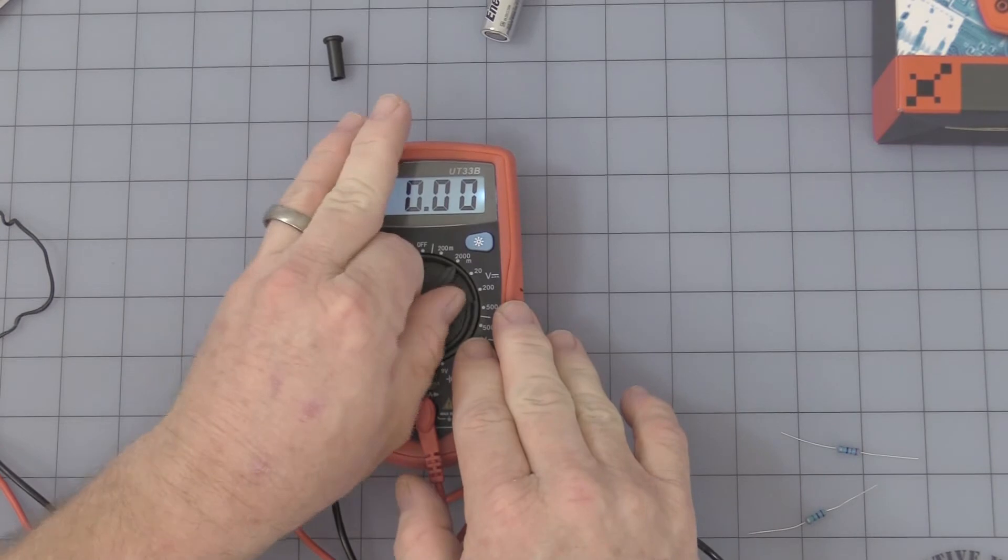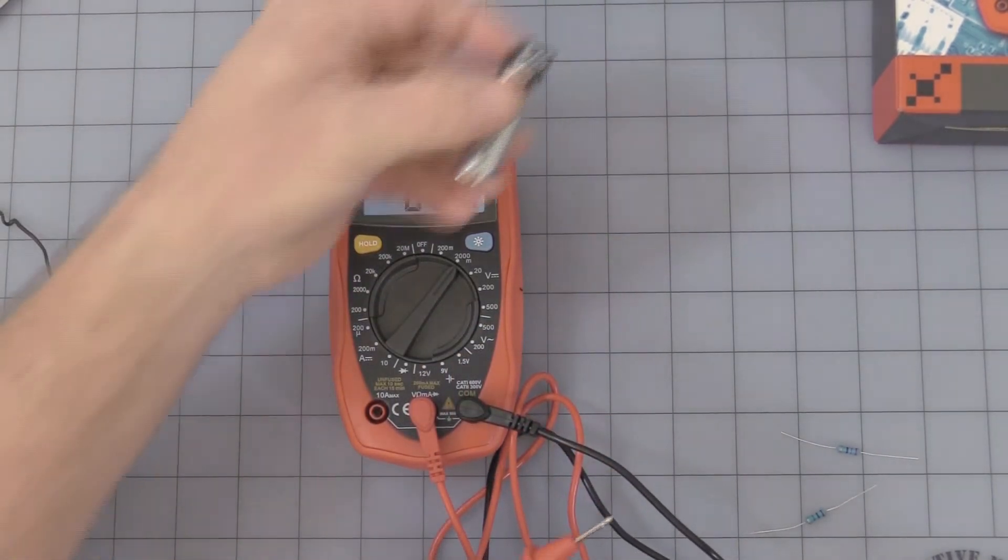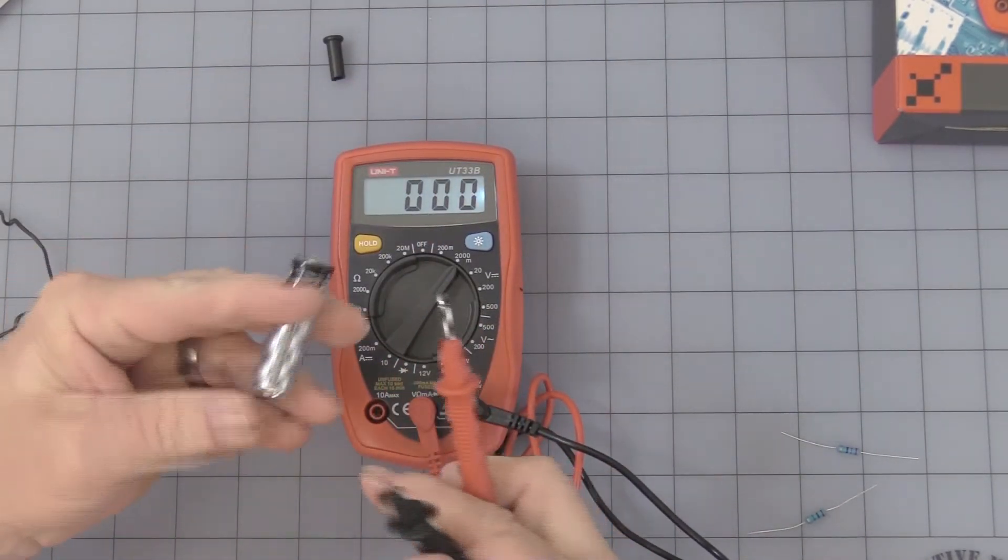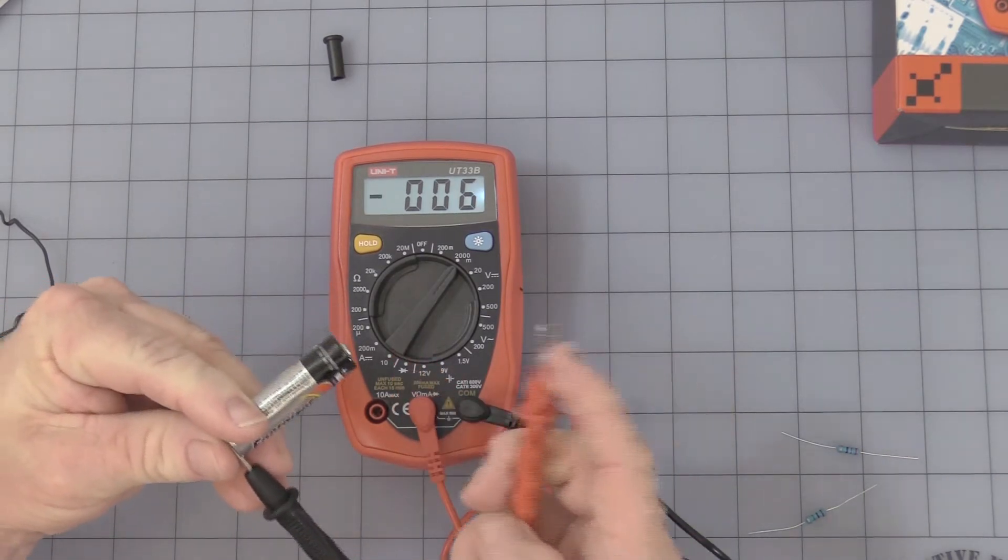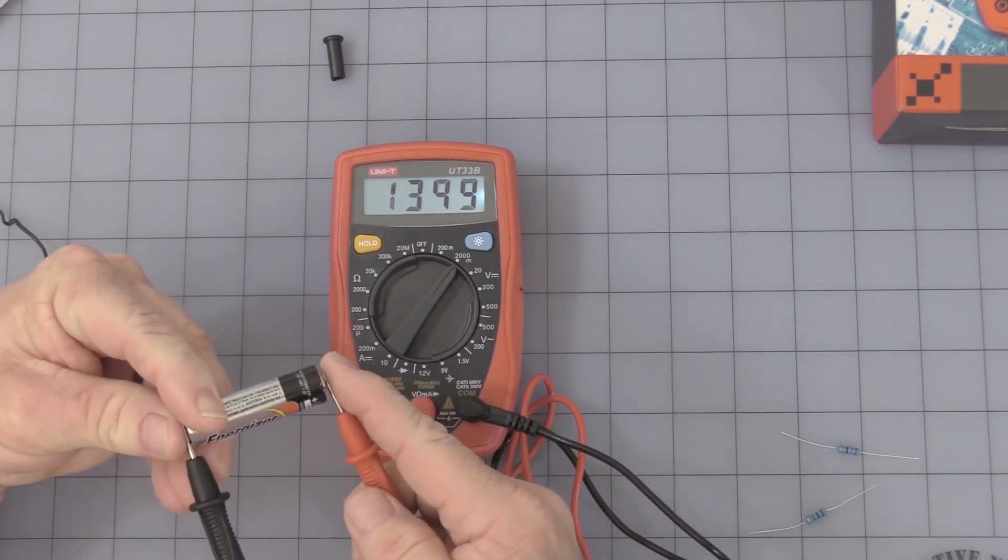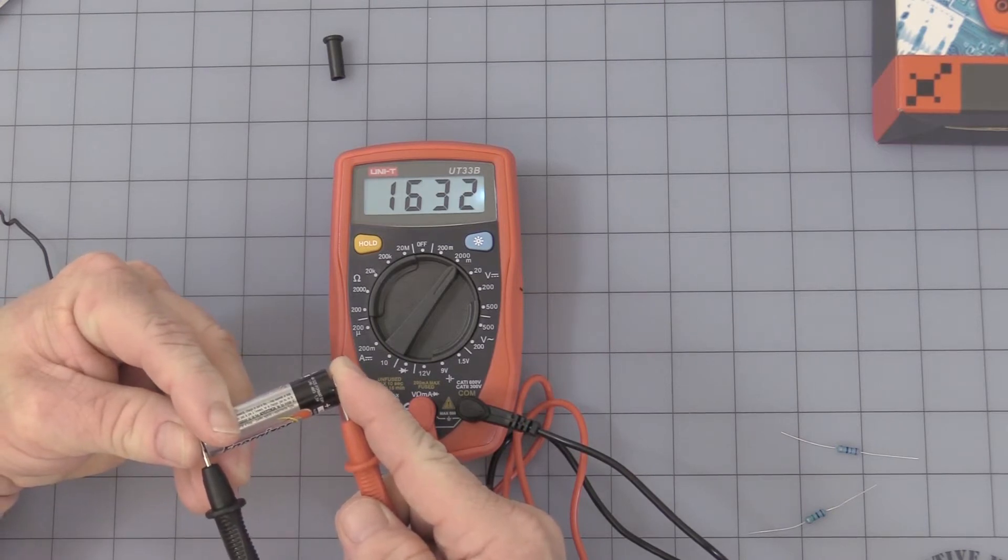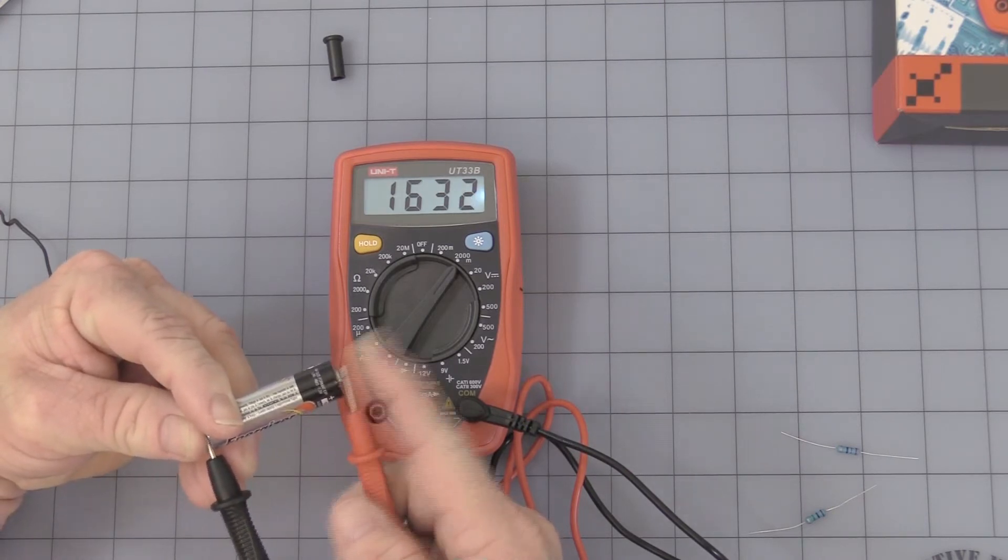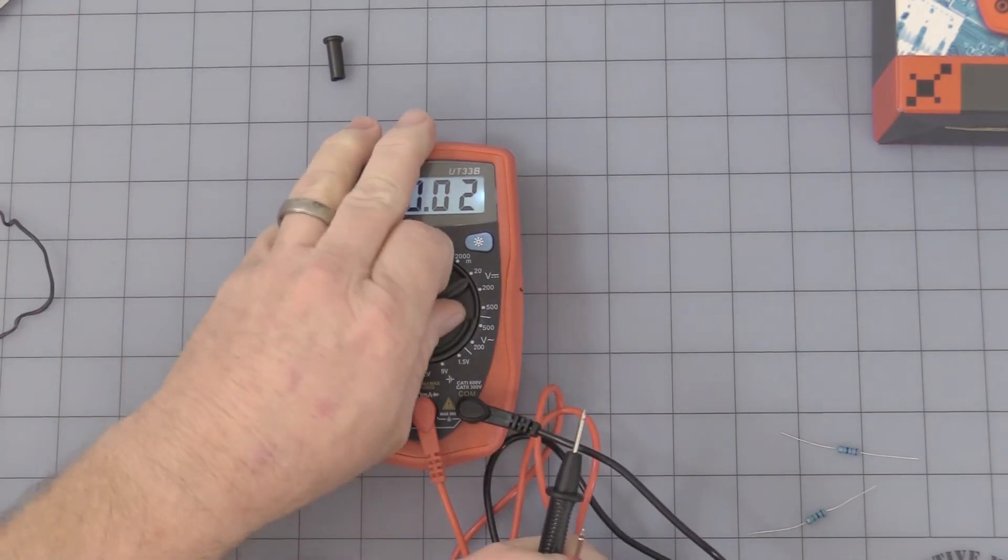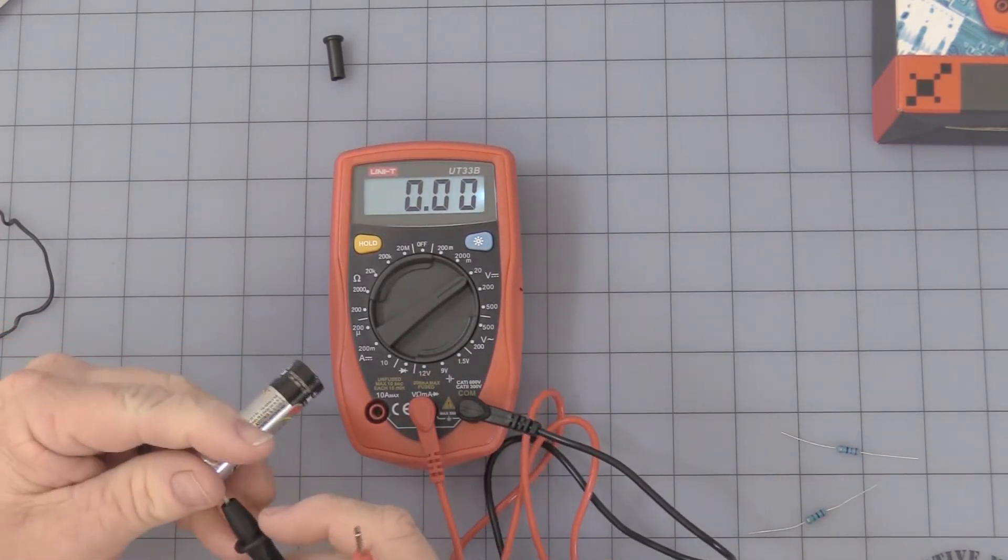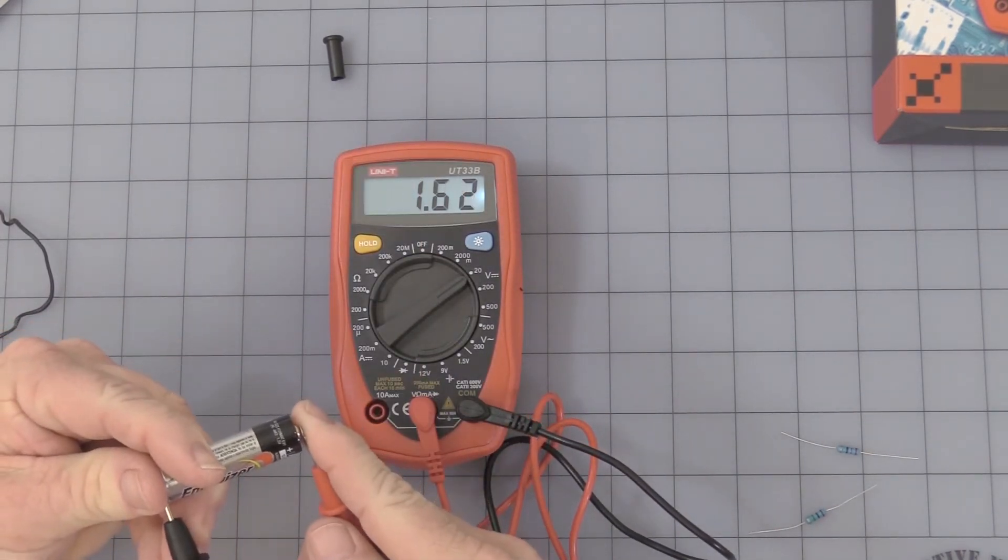Let's start at 2000mV. I have a nice little battery here we will also use later on in the demonstrations. You see 1632 millivolts. Or you simply go to the next range, the 20 volt range, and it will show 1.62.